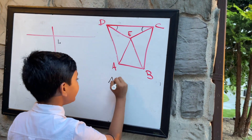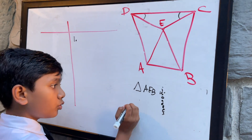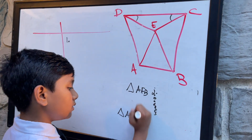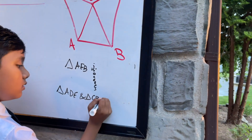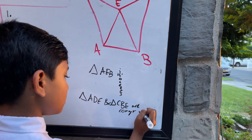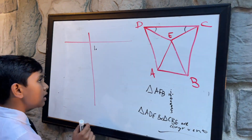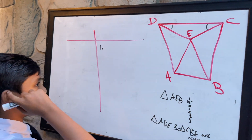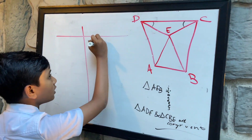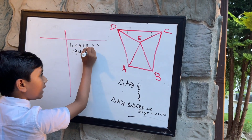Our goal is to prove that triangle AED is isosceles, and to prove that triangles ADE and CBE are congruent. Because AE and ED are perpendicular, we can infer that there is a right angle there. So angle AED is a right angle, and thus ADE is a right triangle.